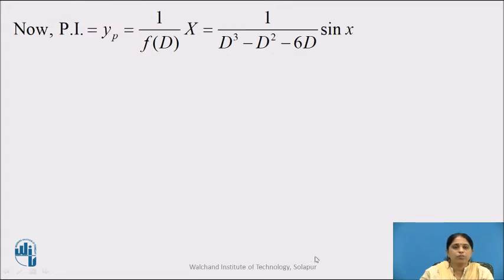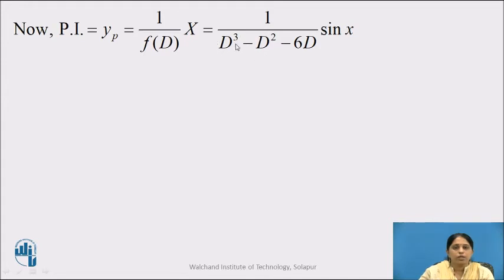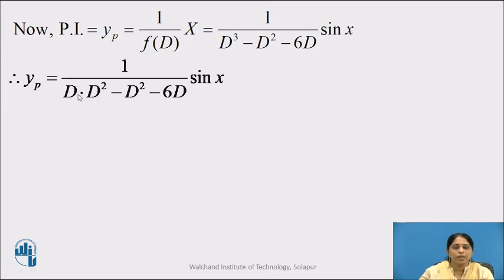Now let us find the particular integral yp = 1/f(D) · X = 1/(D³ − D² − 6D) · sin x. We rearrange f(D) in terms of D². Since D³ = D · D², we write yp = 1/(D · D² − D² − 6D) · sin x.